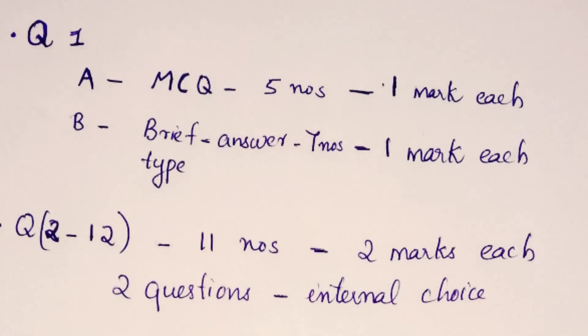Let's check the weightages of these 22 questions for Paper 1 of 70 marks. Question number 1 has two parts. Part A is MCQ, carrying 5 questions of 1 mark each. The second part is very short answer or brief answer type, with 7 questions of 1 mark each. That means question 1 itself carries 12 marks. Questions 2 to 12 carry 2 marks each.